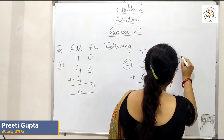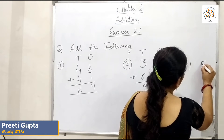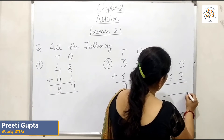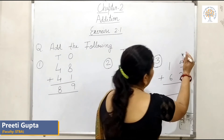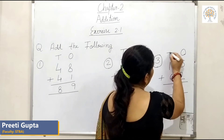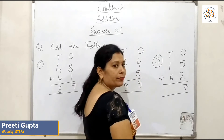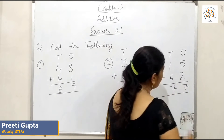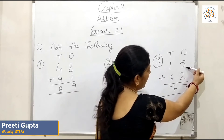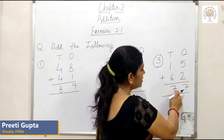Question number 3: 15 plus 62. 5 plus 2 is equal to 7 in the 1's place. 6 plus 1 is equal to 7 in the 10's place. So our answer is 77.